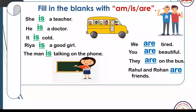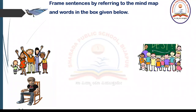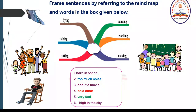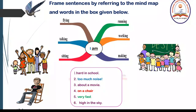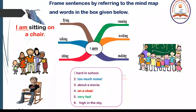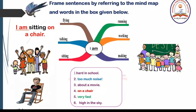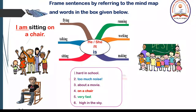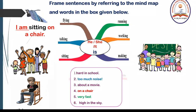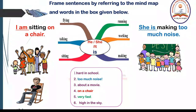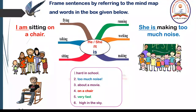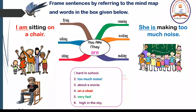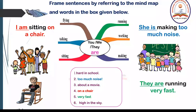Now let's go to activity number two. Frame sentences by referring to the mind map and words in the box given below. First of all, we will frame sentences by using I am. For example, I am sitting on a chair. Children, repeat each sentence after me. Now we will use he, she, or it with the helping verb is to frame a sentence. For example, she is making too much noise. Similarly, we will use you, we, or they with the helping verb are to frame a sentence. For example, they are running very fast.